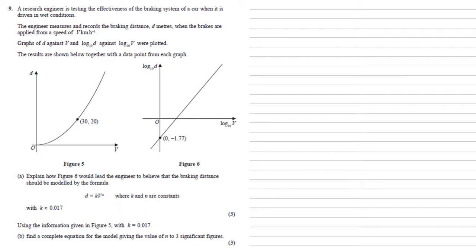For part b we need to use the information given in figure 5 with k equal 0.017 to find a complete equation for the model giving the value of n to three significant figures.